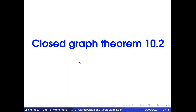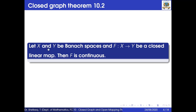Next we will discuss Theorem 10.2, which is known as the Closed Graph Theorem. The statement of this theorem is: let X and Y be Banach spaces and f is a map from X to Y. If f is a closed linear map, then f is continuous.